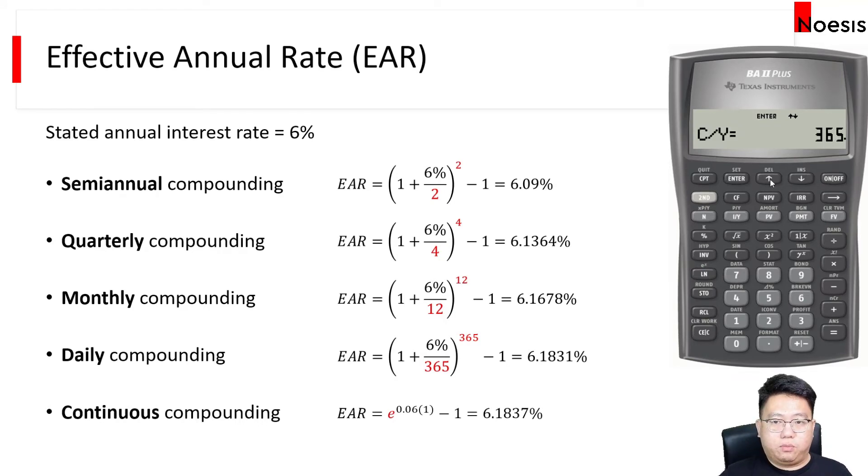So I'll probably put something like, let's say, 100,000, something big. And then I will move back up to Effective Rate and press Compute. I will get 6.18365, it rounds up to 6.1837%. So that's the Effective Annual Rate for continuous compounding.